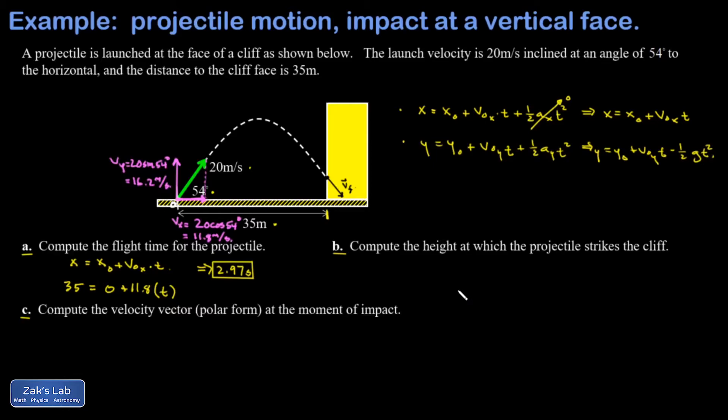In part b, we want to know the height at which the projectile strikes the cliff. Now I know how long it's been in the air, so if I look at my vertical projectile motion equation, all I have to do is plug that time in and I've got the height at a time of 2.97 seconds. So y equals y naught (that's zero) plus v naught y times t (that's 16.2 meters per second times t)—again, the initial y velocity is not 20, it's just a component of that 20—minus one half times 9.8, g is 9.8, times 2.97 squared. When I run the numbers on this, I get a height of 4.89 meters, so it strikes the cliff face just a little less than five meters above the ground.